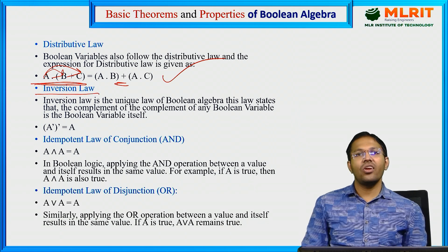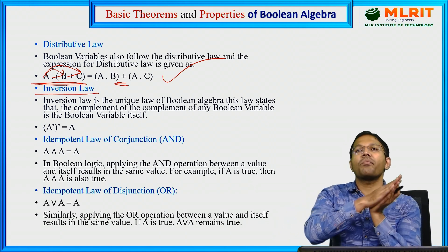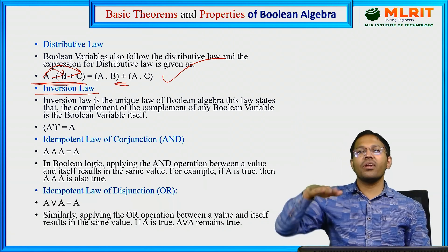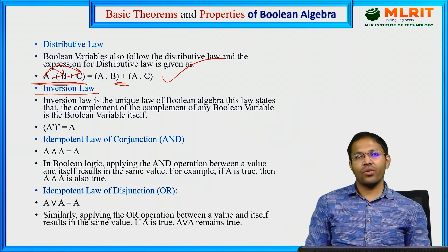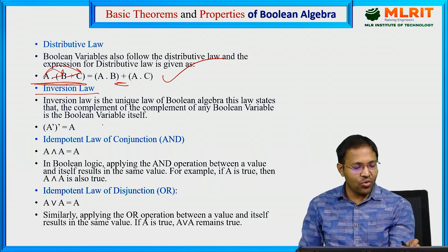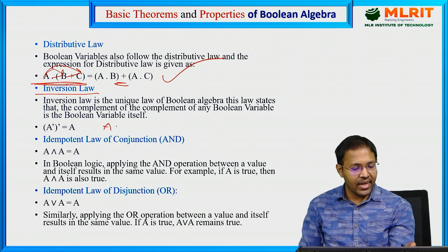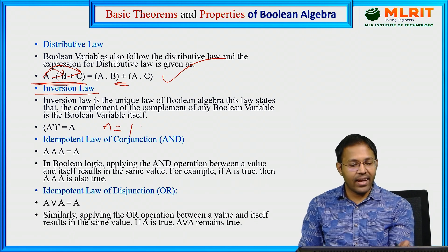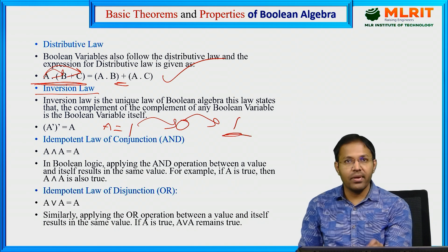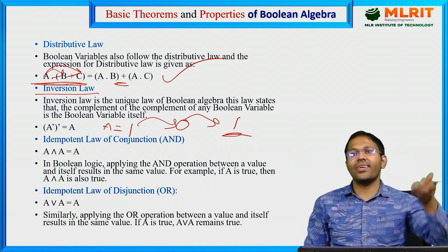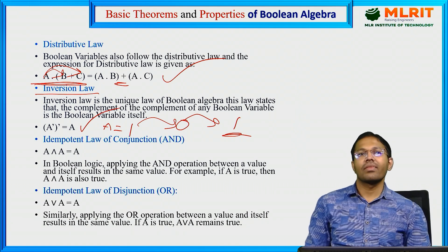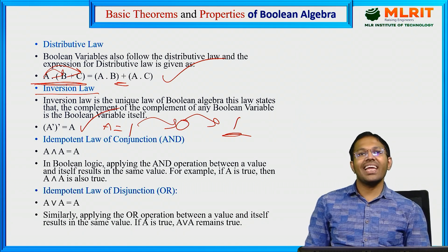Next, Inversion Law. If you take complement, for example, complement of 1 is 0, complement of 0 is 1. What is happening? Suppose A has value 1. Take complement of this 1, it becomes 0. Again you take complement, it becomes 1. So two times if you take complement, we get back the same result. That is your inversion law.